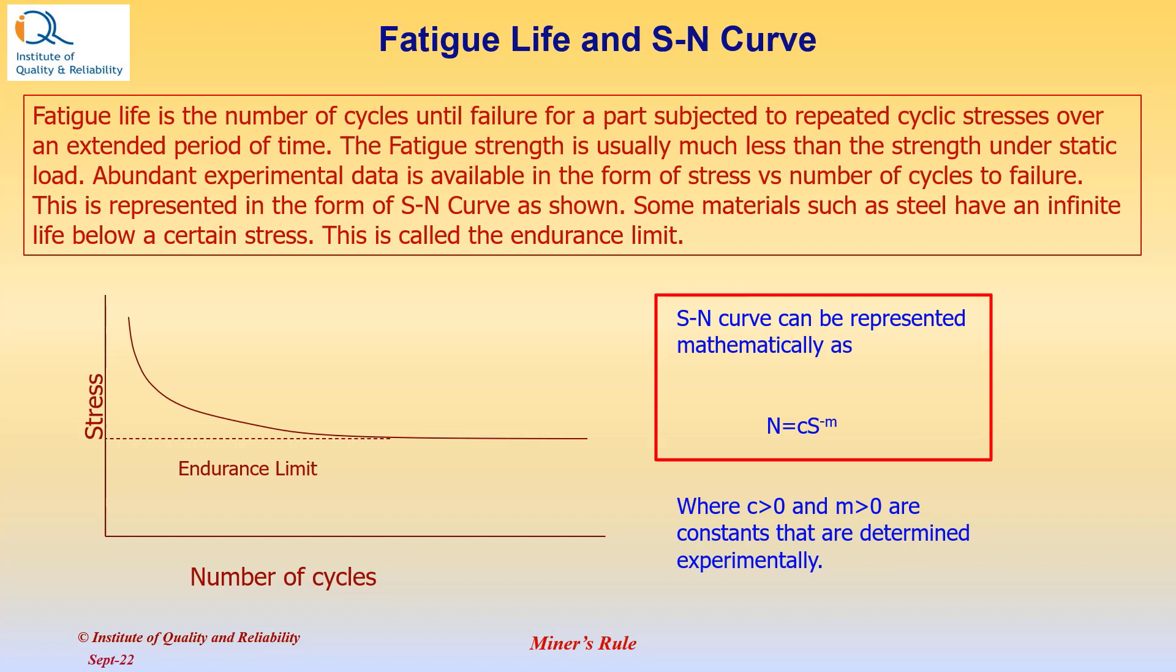SN curve can be represented mathematically as number of cycles to fail equals a constant C times the stress raised to minus M, where C and M are constants greater than 0 and these are determined experimentally.